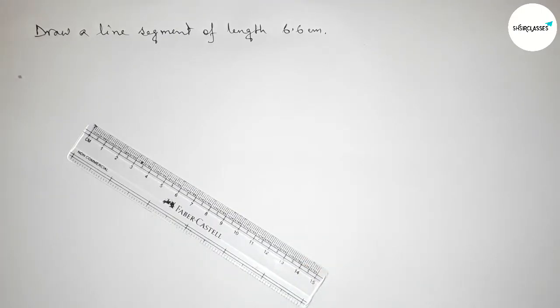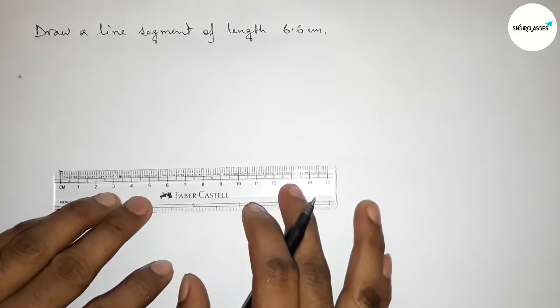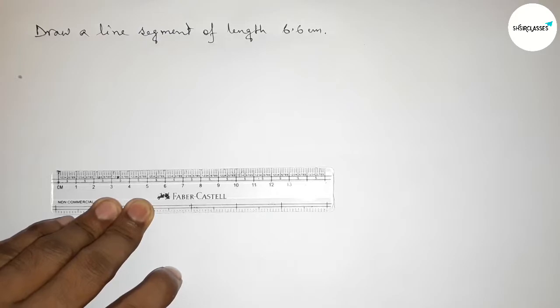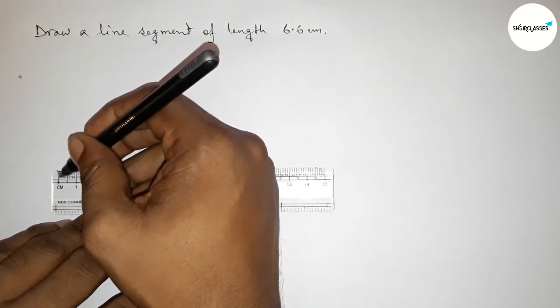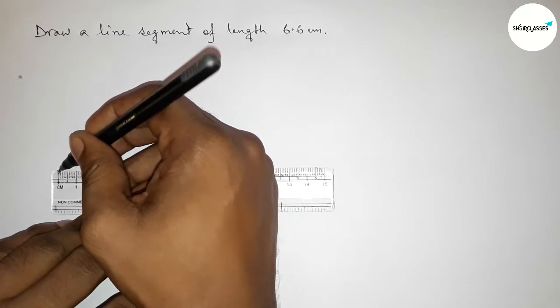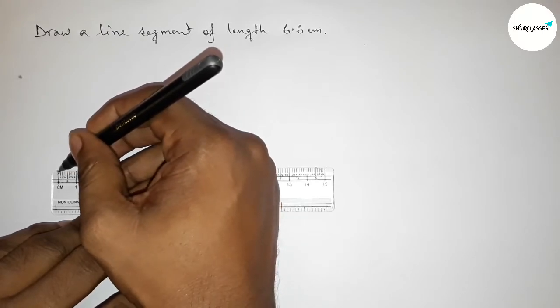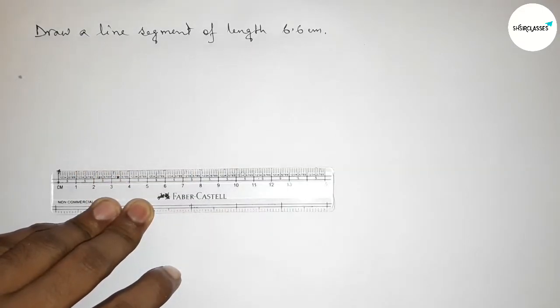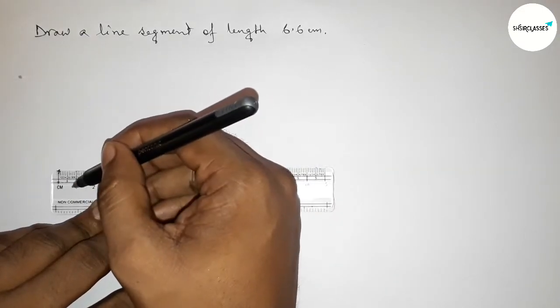First, putting the ruler here by this way, perfectly. Then counting the length 6.6 centimeters. So this is starting zero. First marking here the starting zero centimeter, then counting. So this is 0, 1...